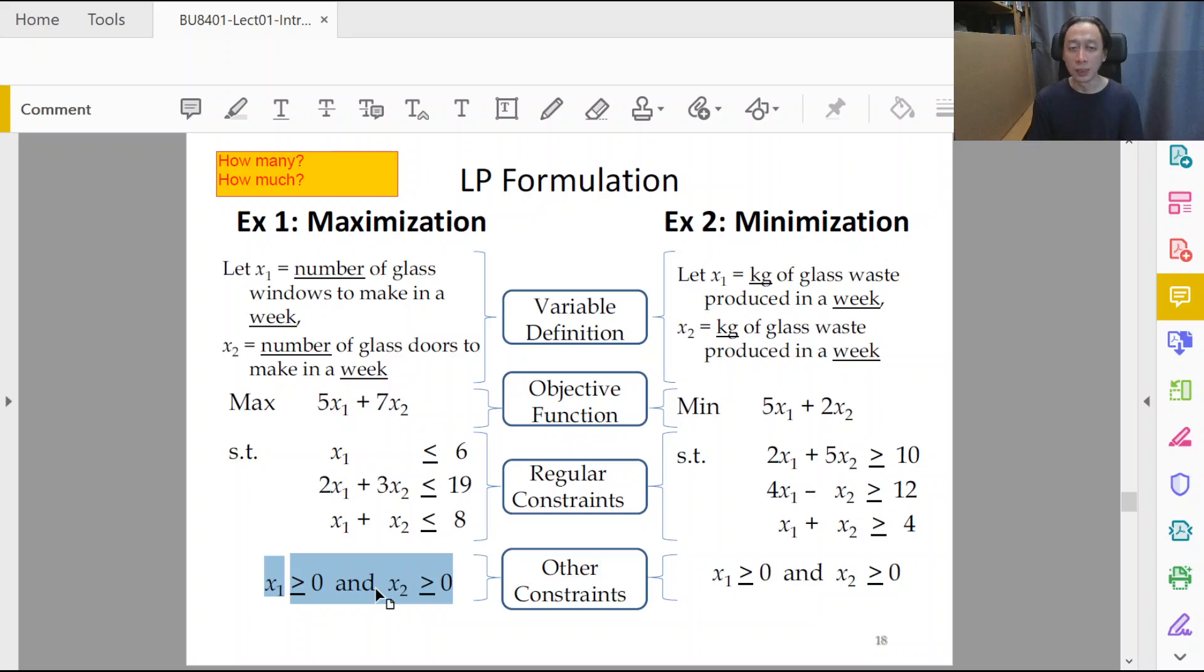We don't want a solution where maybe the computer software, maybe Excel, says manufacture negative two doors. How do I do that? I can't do that. Maybe what that means is to salvage, melt two doors, use the glass material to make more windows. That's insane, that's not possible.